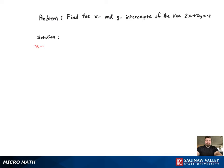First we're going to find the x-intercept. That means y is going to equal 0. Now we're going to plug that in and solve for x.